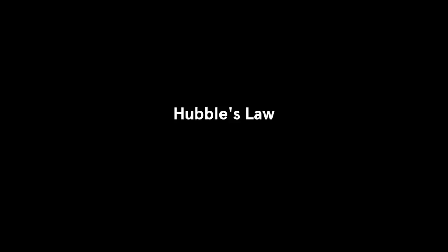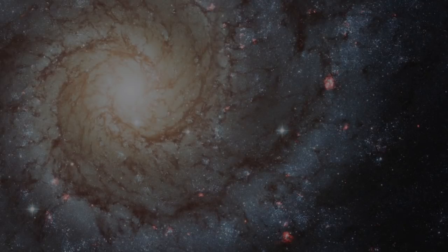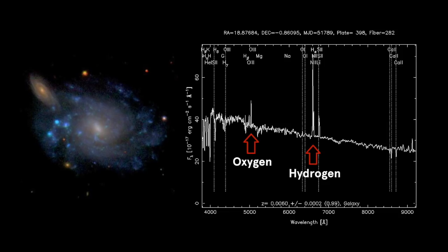Hubble's law is extremely useful because measuring redshift is relatively easy, and certainly much easier than hoping for a timely supernova. For example, we can measure the wavelengths of light from a distant galaxy and look for the signatures of the elements.